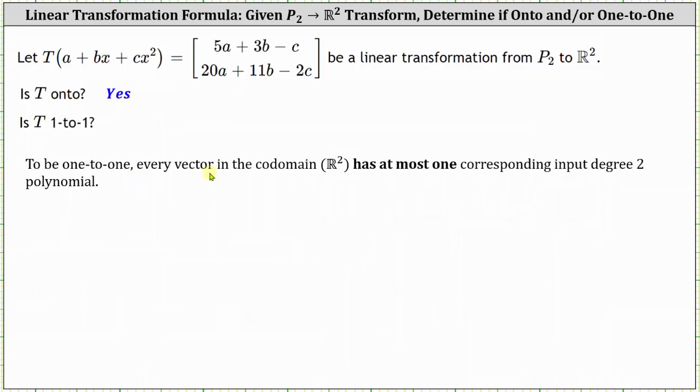To be 1 to 1, every vector in the codomain has at most one corresponding input degree 2 polynomial.